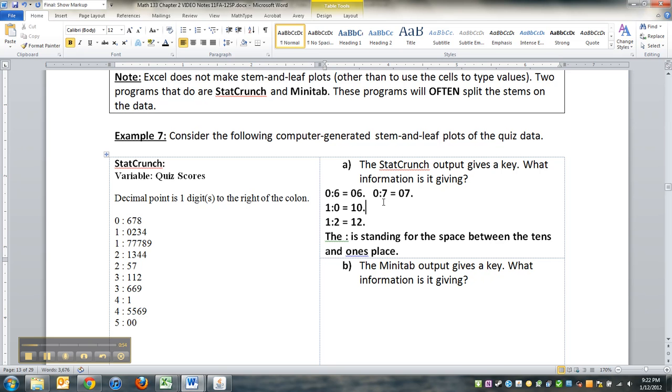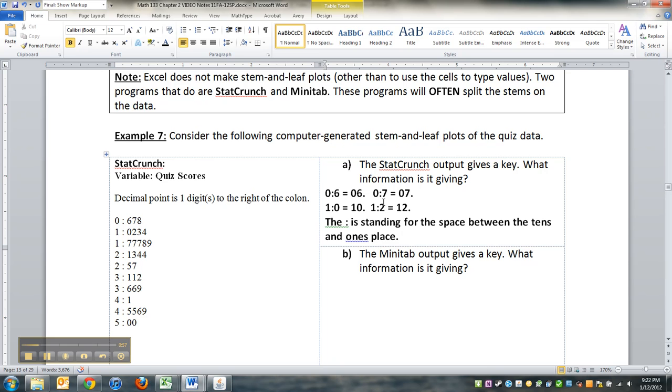When you look at one colon zero, that's one zero decimal point. One colon two is one two decimal point. And yes there is a one colon two, that's the leaf. And then the next one is one colon three and so on, so that would be thirteen. In other words, the colon is standing for that space between the tens and the ones place.